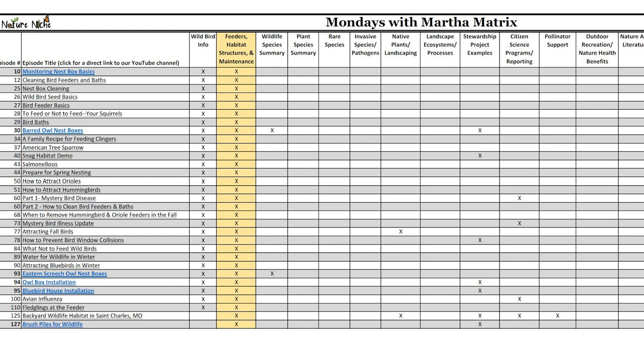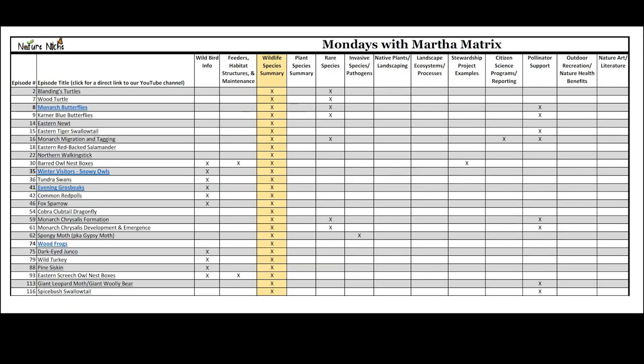The second category covers feeders, habitat structures, and maintenance of those wildlife habitat structures. There are posts about how to monitor nest boxes, specifics about siting and monitoring, when to put up barred owl and eastern screech owl nest boxes, a demonstration of how we installed one on our own property, what you need to know about siting and putting up bluebird houses, and things like wildlife brush piles.